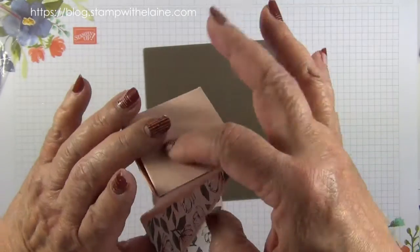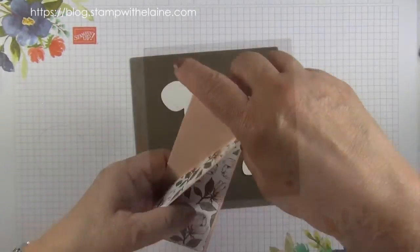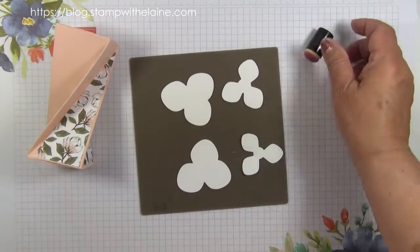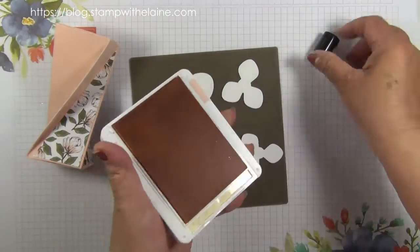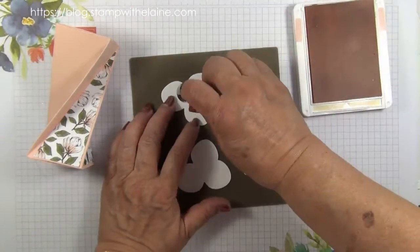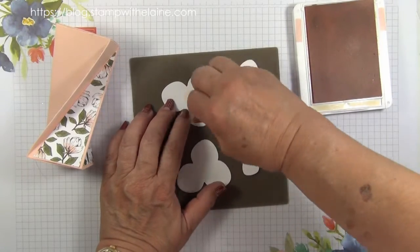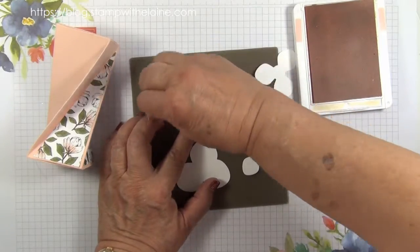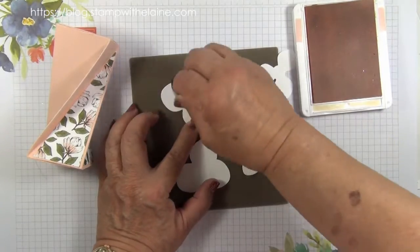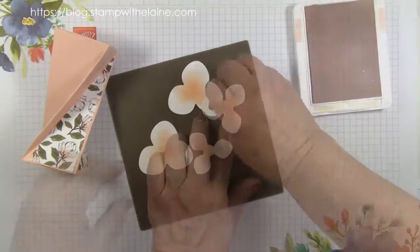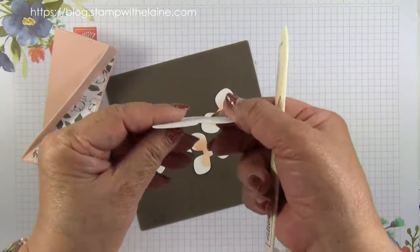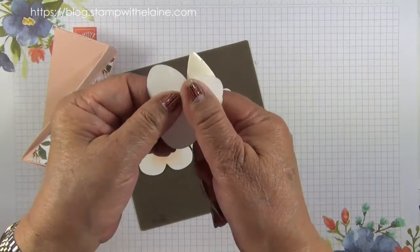And then do the embellishment for the top. Now because my flowers are Petal Pink, I'm going to do a Petal Pink center. Just work from the middle outwards, flicking it. Then grab your bone folder, turn your flower upside down, and curl.